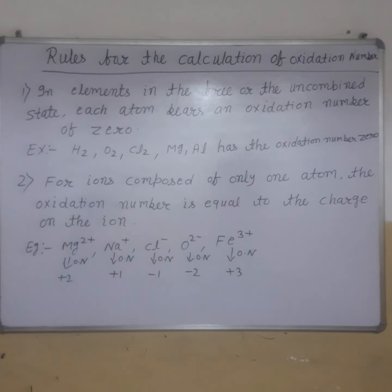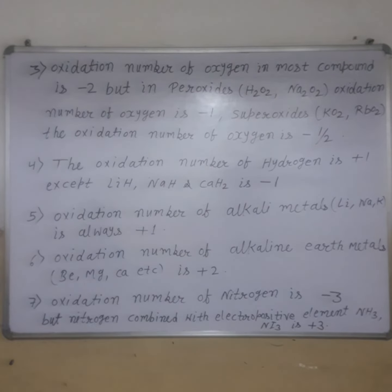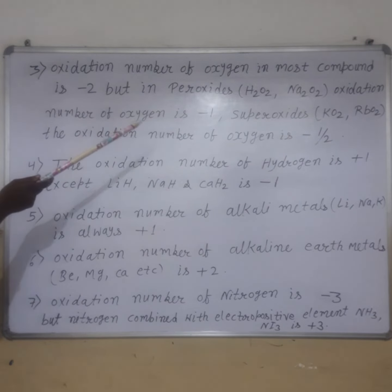Rule 3: Oxidation number of oxygen in most compounds is minus 2. But in peroxides like H2O2 and Na2O2, oxidation number of oxygen is minus 1.